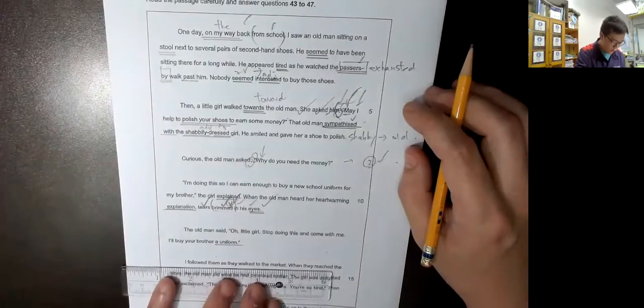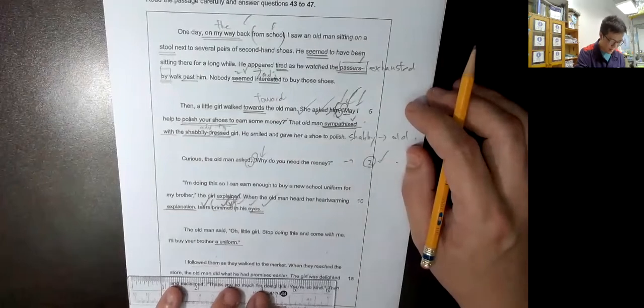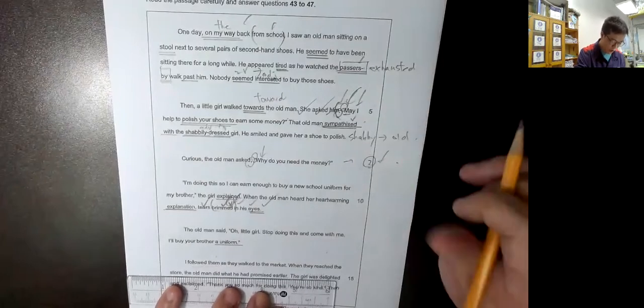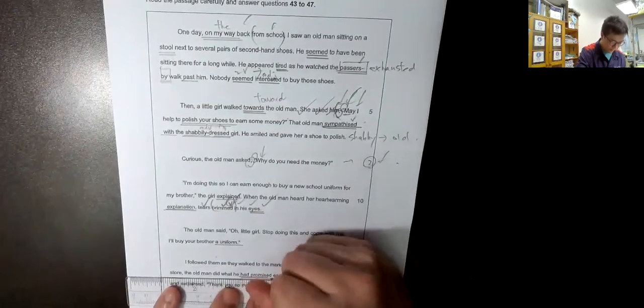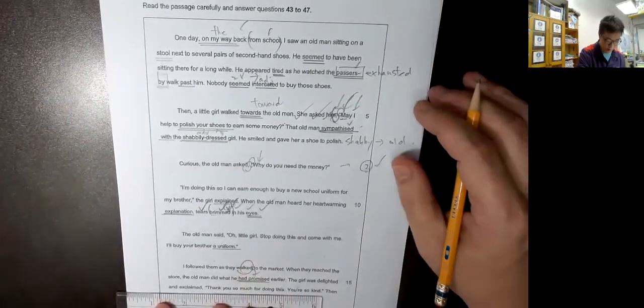I followed them as they walked to the market. When they reached the store, the old man did what he had promised earlier, past perfect. 為什麼你要用past perfect? 因為早過才沒有past perfect, 用past perfect, had promised early.